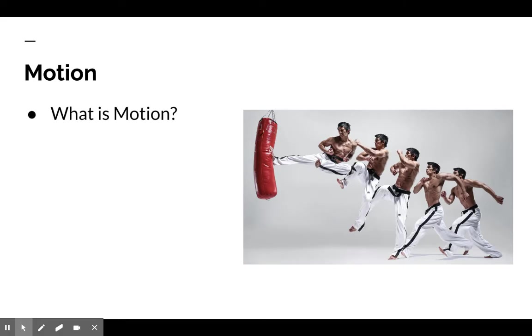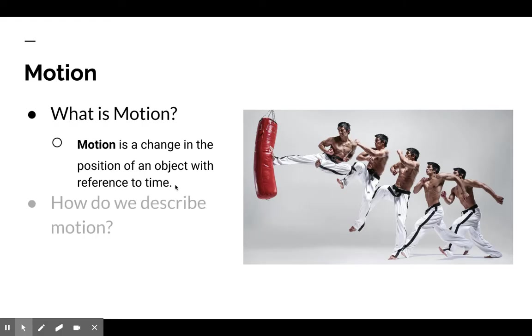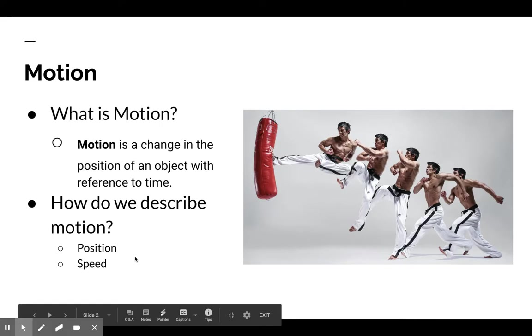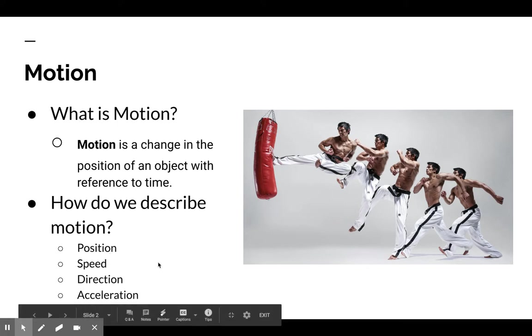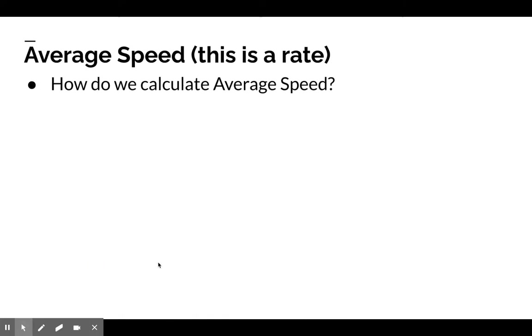So first up, let's talk about motion. What is motion? We all kind of think about what it is, but we don't actually often think about the definition. Motion is a change in the position of an object related to time. We often refer to motion both in the change in position and how long it took for that change to occur. When we describe motion, we describe it using position, speed, direction, and acceleration. We're going to talk about how speed and acceleration are not the same thing.